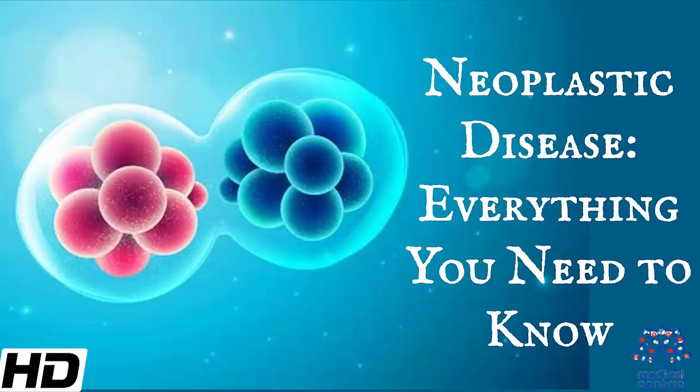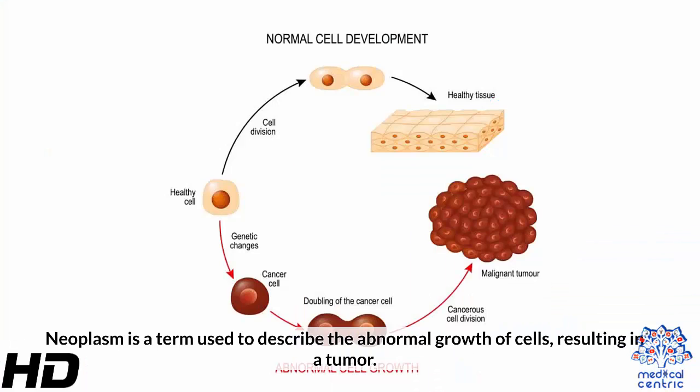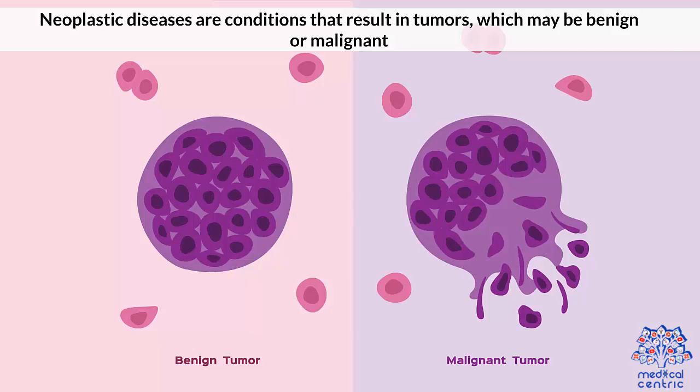Today's topic is Neoplastic Disease – Everything You Need to Know. Neoplasm is a term used to describe the abnormal growth of cells, resulting in a tumor. Neoplastic diseases are conditions that result in tumors, which may be benign or malignant.